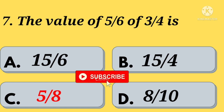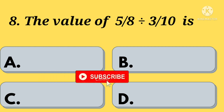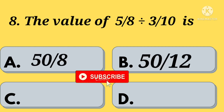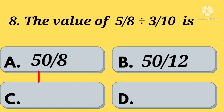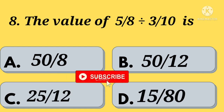Eighth question: the value of 5 by 8 divided by 3 by 10 is — Option A: 50 by 8. Option B: 50 by 12. Option C: 25 by 12. Option D: 15 by 80. Your time starts now.